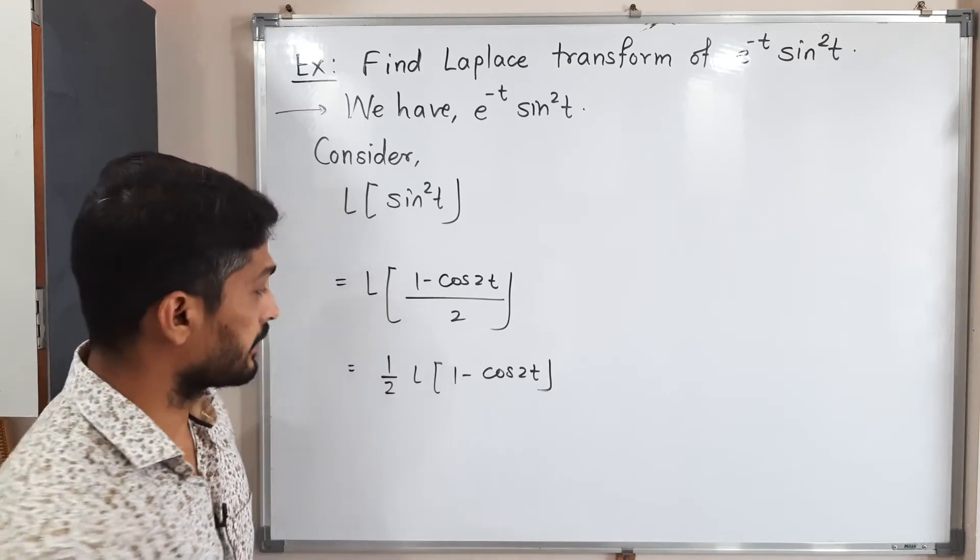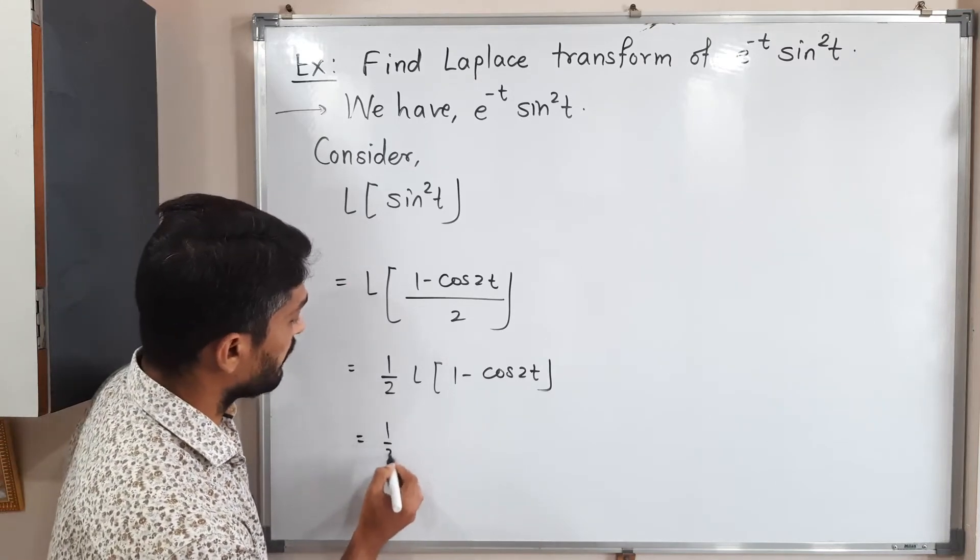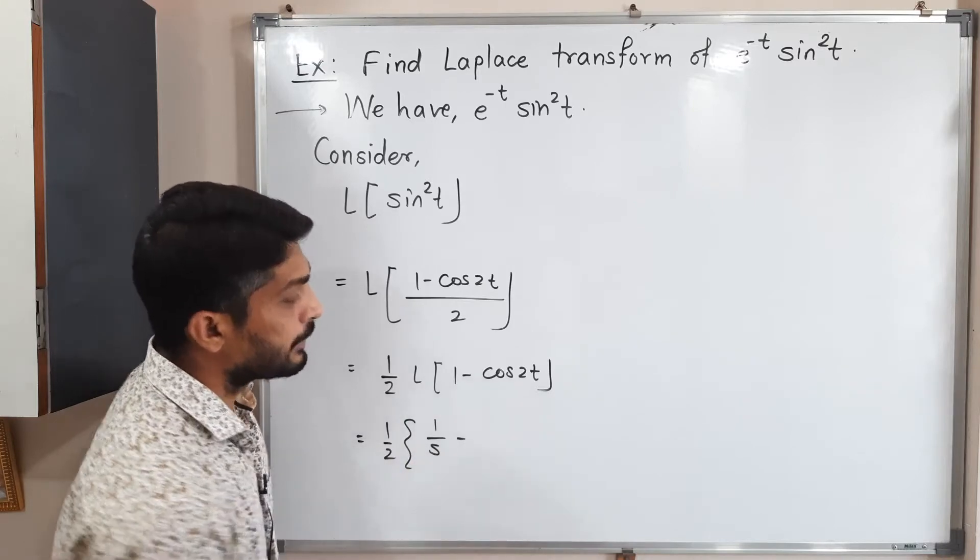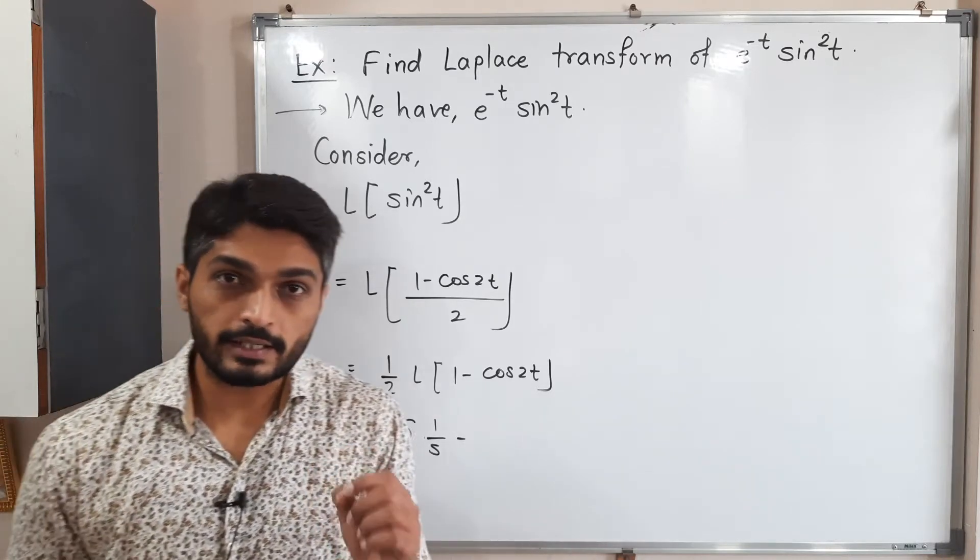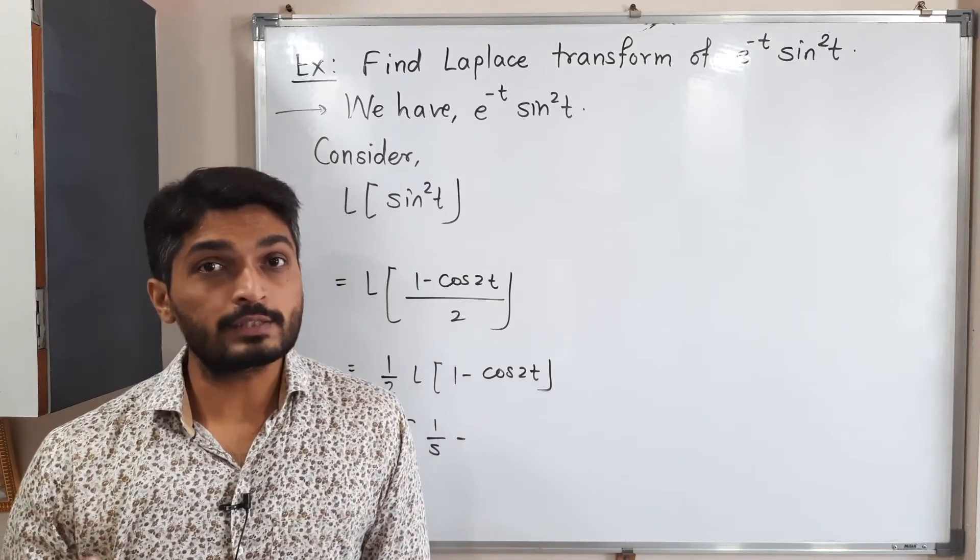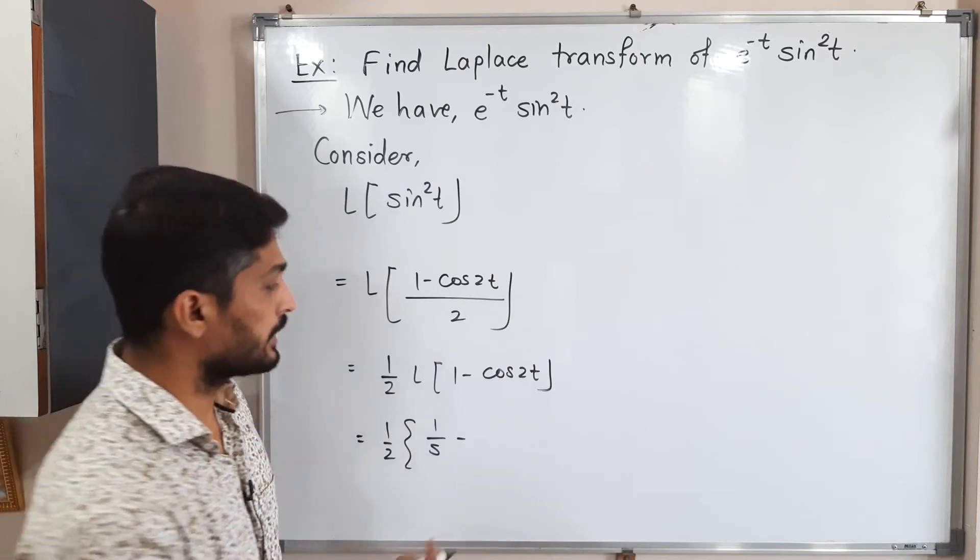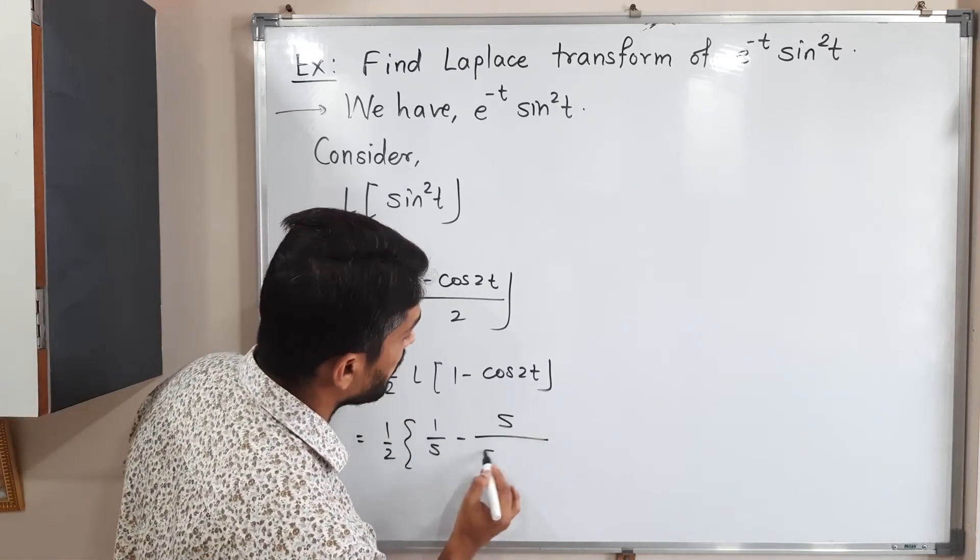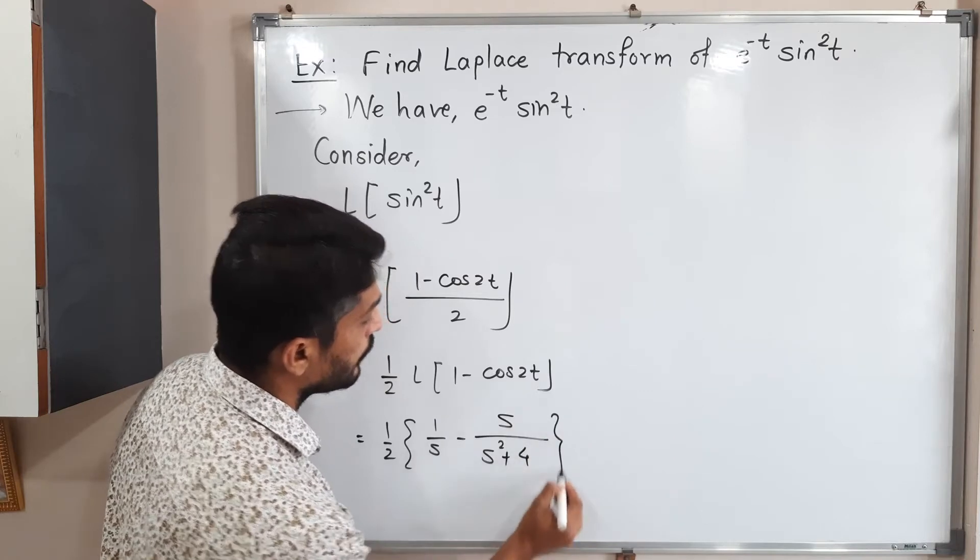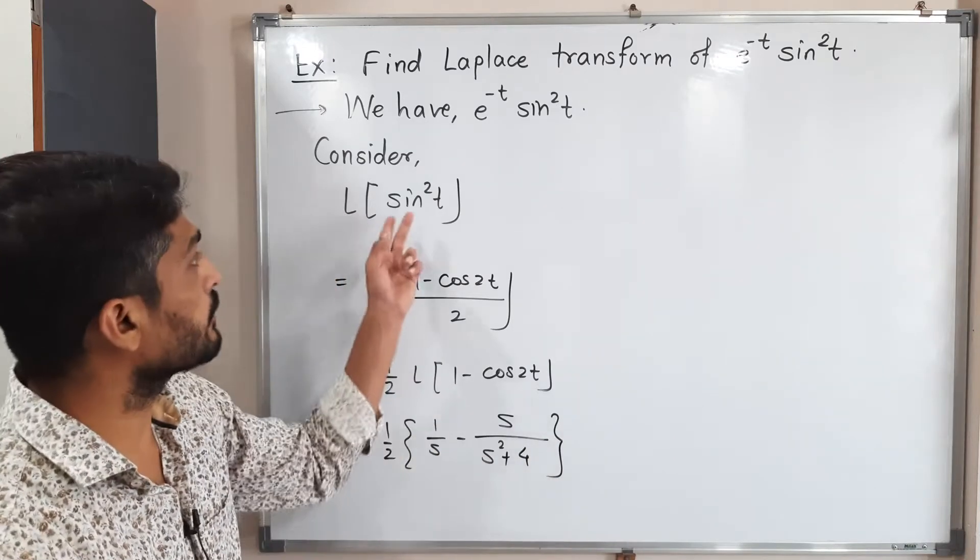I am directly writing the answer here. So this is equal to 1 by 2. Laplace of 1 is 1 by s. Laplace of cos 2t: we have a standard formula for Laplace of cos at, which is s upon a square plus a square. So that formula I am using here: s upon s squared plus a is 2, so 2 square is 4. So in this way we got Laplace of sine square t.